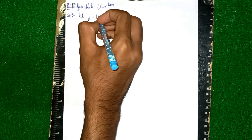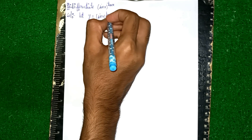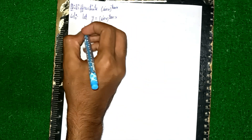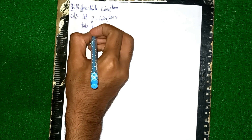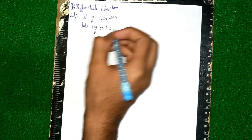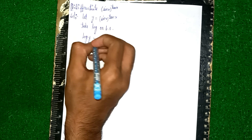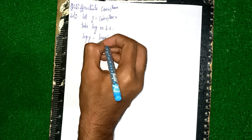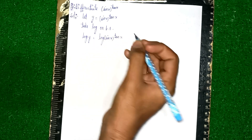We are assuming y = sin(x)^tan(x). After this, we take log on both sides. Taking log on both sides gives us: log(y) = log(sin(x)^tan(x)).